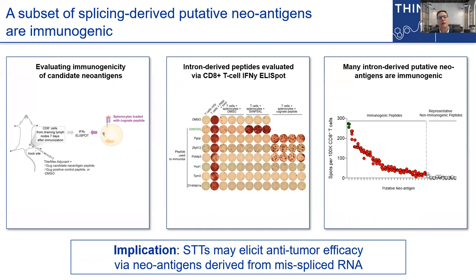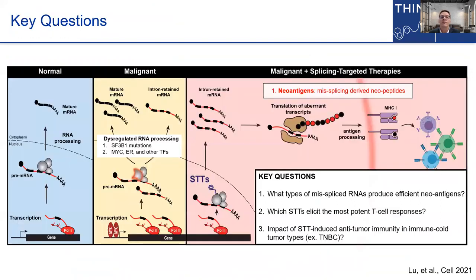These data raise the important implication that the anti-tumor efficacy of STTs could, in part, be driven by mispliced RNA and their resulting neoantigens and T-cell responses. If this model holds true and we're going to exploit this mechanism in breast cancer, there are some critical questions on the horizon. First, among the diverse species of mispliced RNA found in tumor cells, which are the most efficient at being translated and presented as neoantigens? Second, given that STT modalities can elicit very different patterns of mispliced RNA, it'll be critical to delineate which STTs can induce the most potent neoantigen presentation and concomitant T-cell responses. And finally, how does tumor heterogeneity impact this approach — and can STTs elicit immune responses in typically immunosuppressive and immune-cold tumors like triple negative breast cancer?